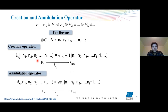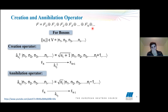Here comes the equation. The Fock space F is the direct sum of different Fock states for different numbers of particles: F-zero means zero particles, F-one means one particle, and so on. We can describe it according to different particles. For bosons — particles that follow symmetric commutation relations, such as photons, gluons, or the Higgs boson — and for fermions — which follow anti-symmetric relations, such as electrons, protons, and neutrons.